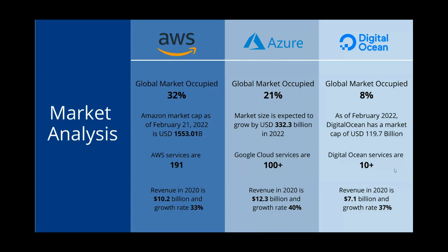As of February 2022, AWS reached $1,553.01 billion in usage amount. Azure grew by USD $332.3 billion in 2022. DigitalOcean captured $1.07 billion in market share. AWS services count 191 plus, Google Cloud 100 plus, and DigitalOcean 10 plus — showing a very large difference among the three cloud providers.